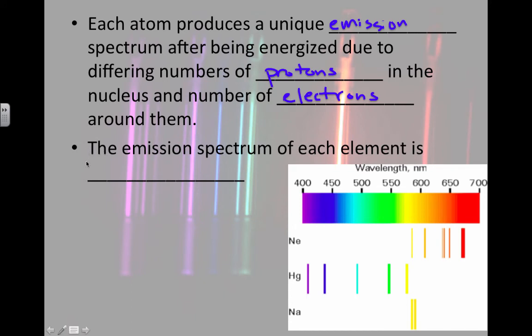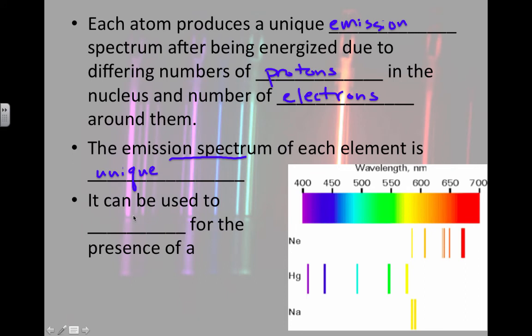The emission spectrum of each element is unique. And because it is, we can use the spectrum to identify which elements are present. So we can use the emission spectrum as a test to decide what particular elements are there and which ones are not.